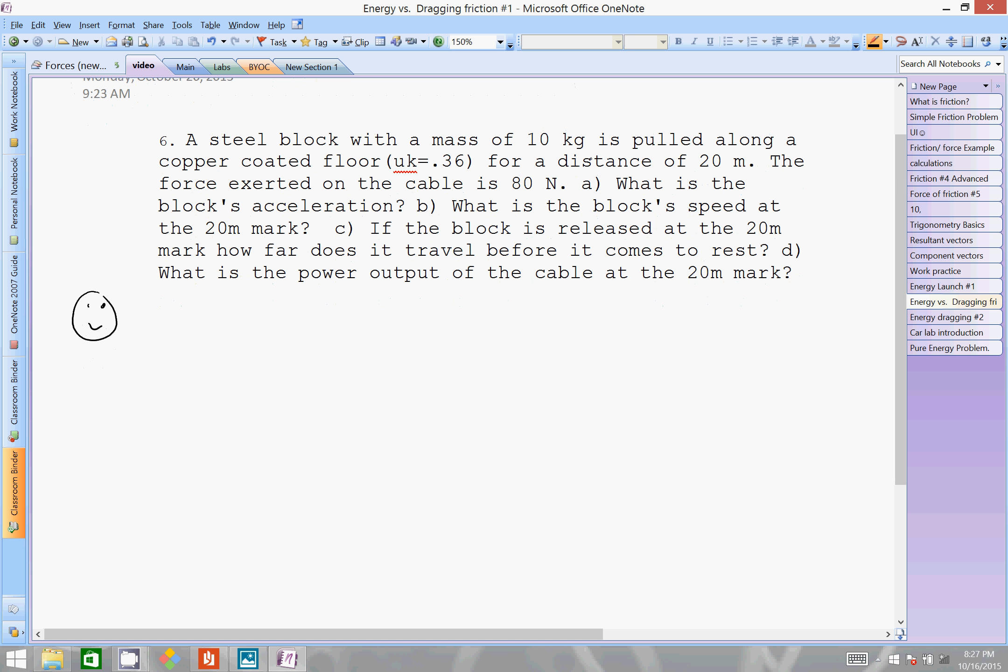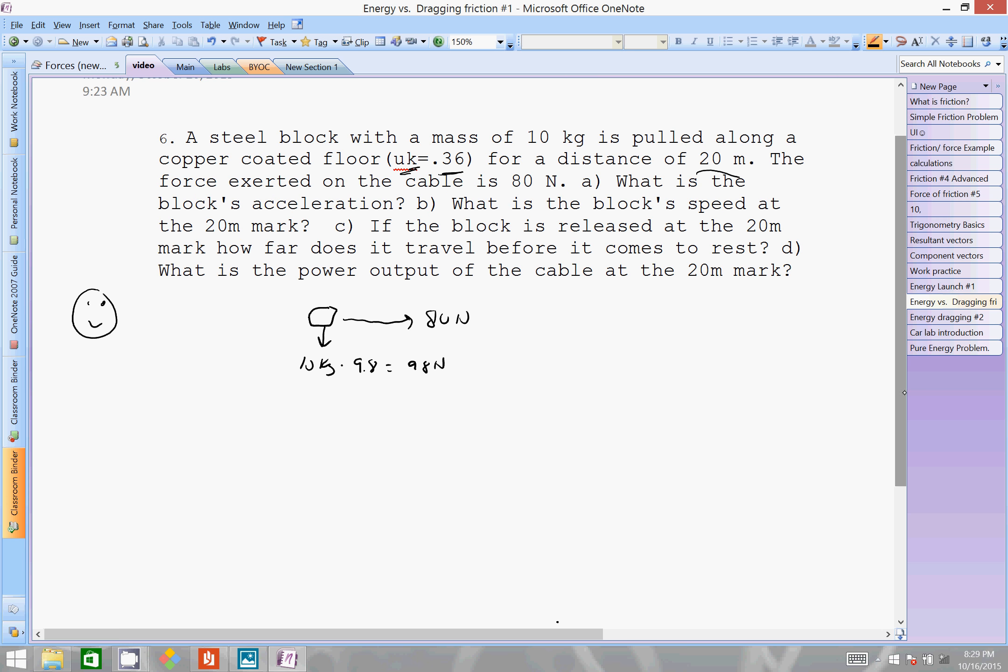It says we have a steel block with a mass of 10 kilograms pulled along by a copper coated floor. There's the coefficient of friction of movement, it's 0.36 for a distance of 20 meters. The force that's done on the cable is 80 newtons. And what is the block's speed at the 20 meter mark? If the block is released at the 20 meter mark, how far does it travel before it comes to rest? And what's the power output of the cable? So if you want to pause your video right now and kind of try it on your own first.